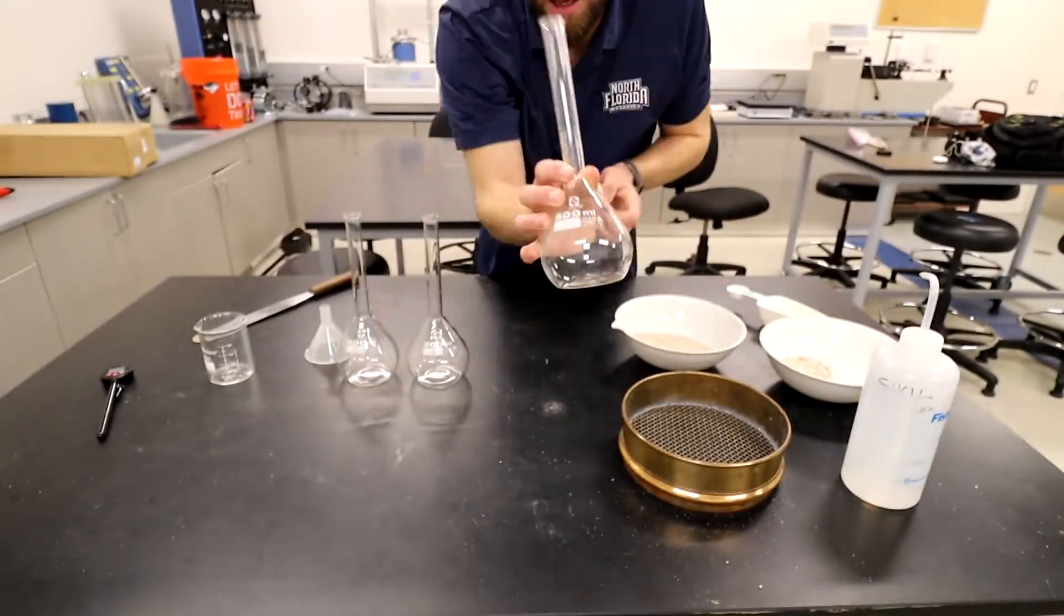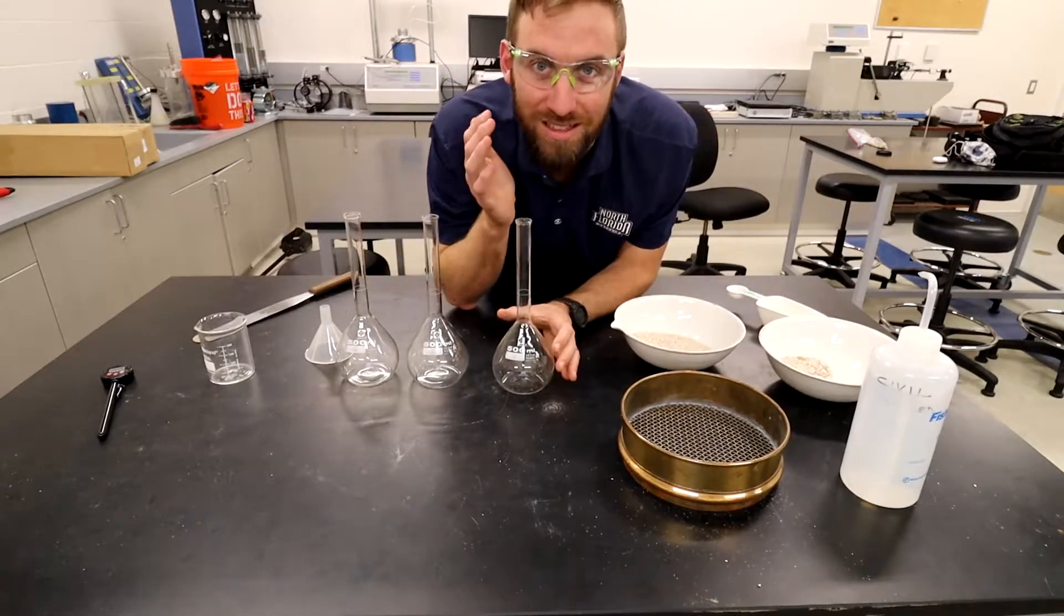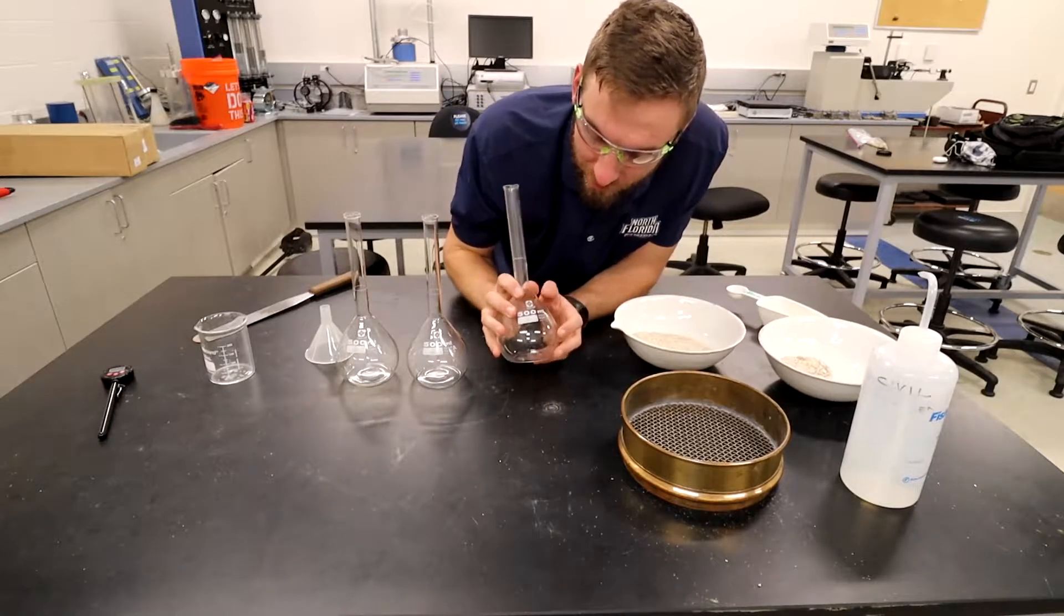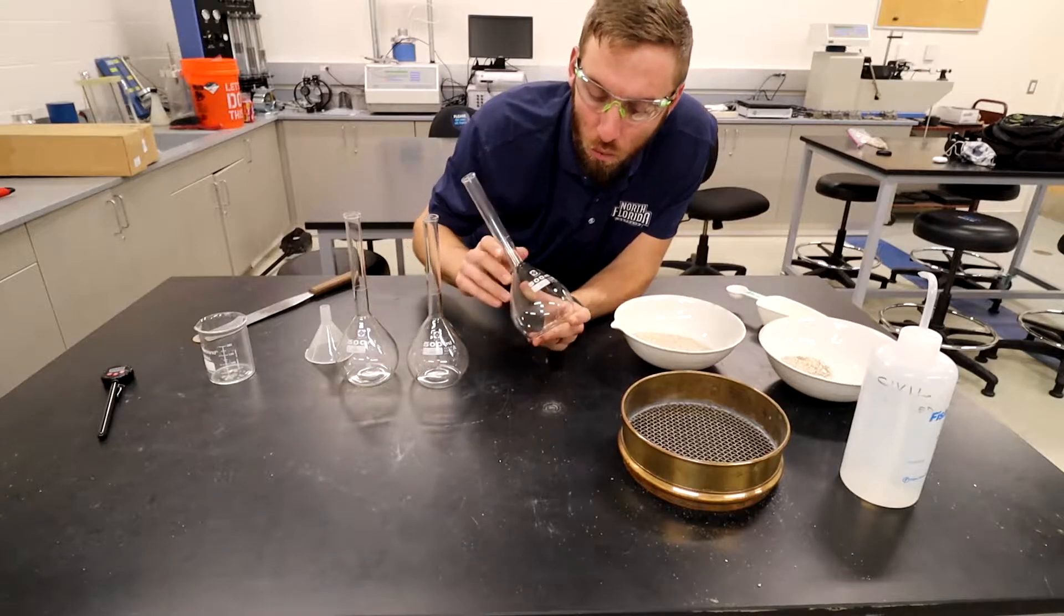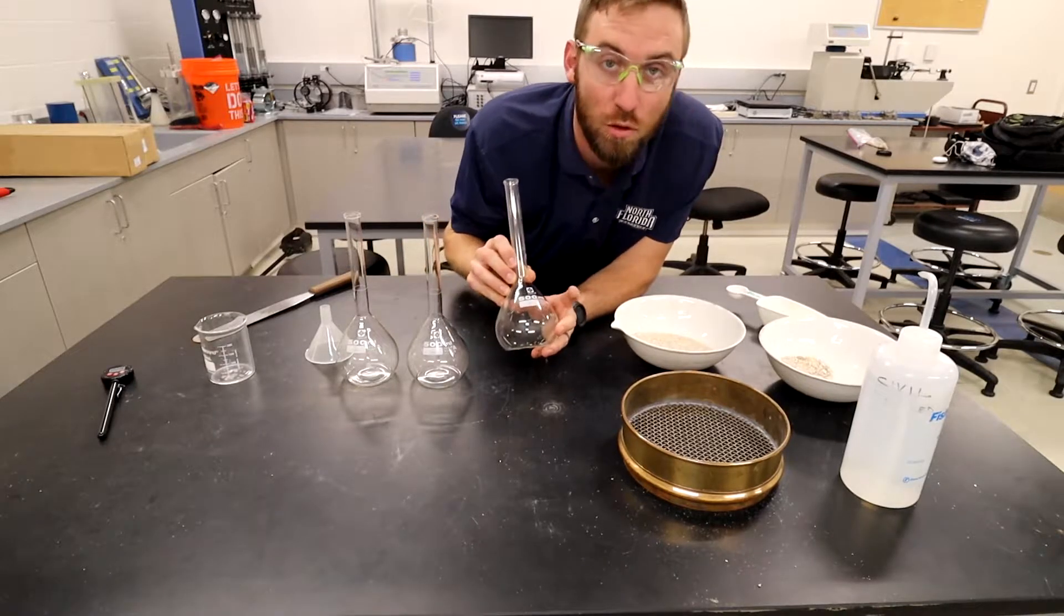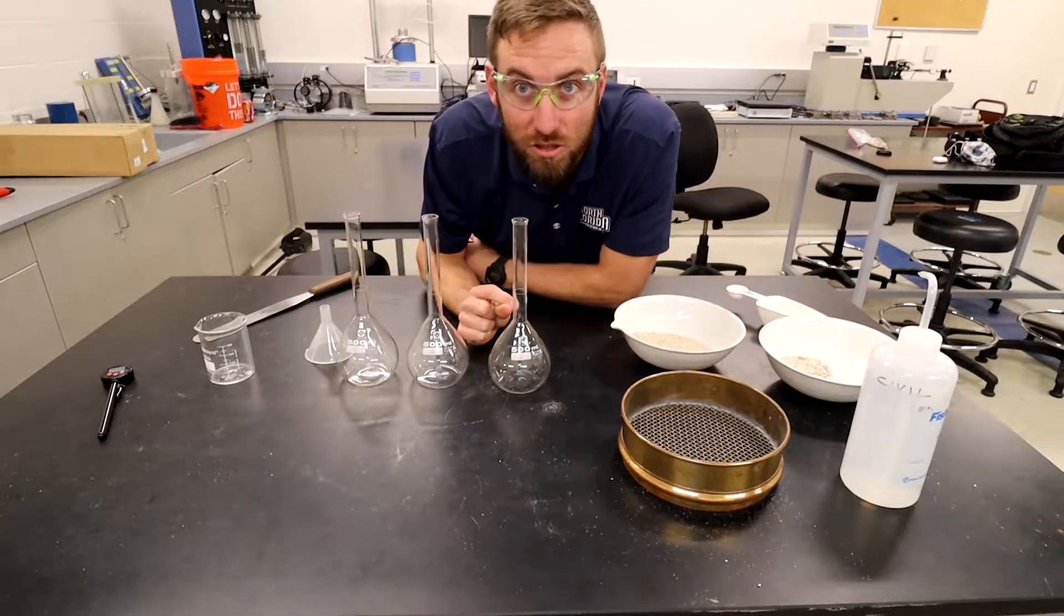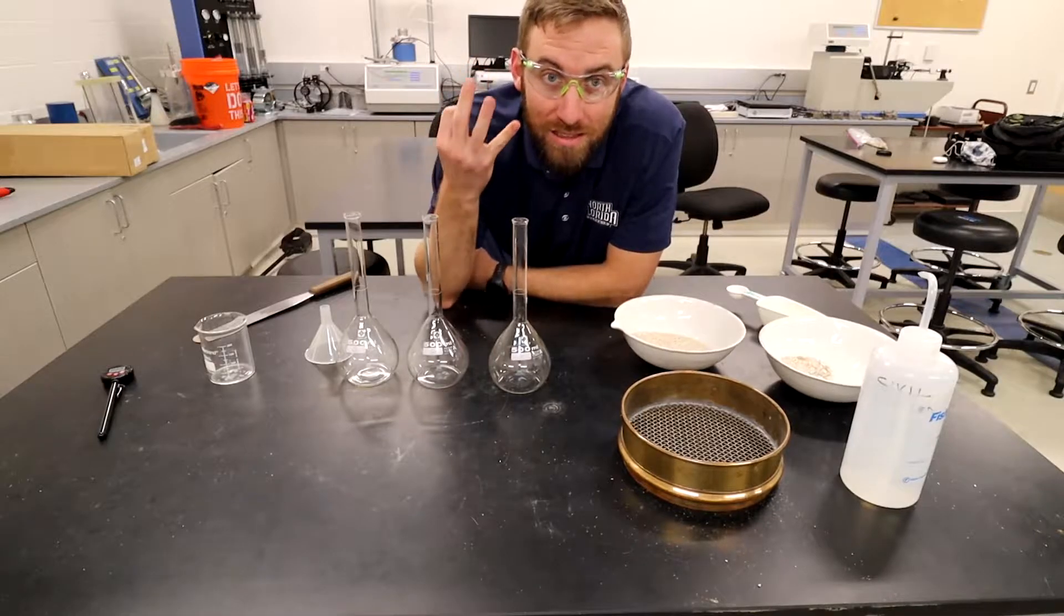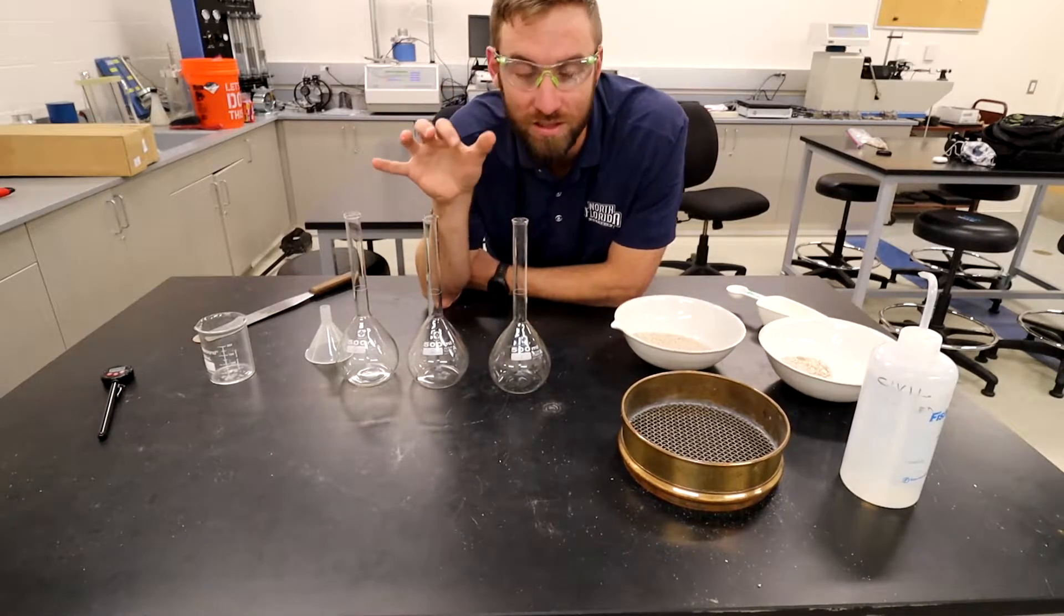There's a little white line at each one. These are basically highly calibrated containers that when filled to that line with a standard temperature of 20 degrees Celsius, we know it will be exactly 500 milliliters. We have three of them. We're going to do three tests and take the average of them just to reduce the amount of error.